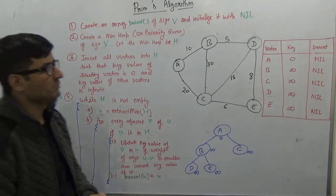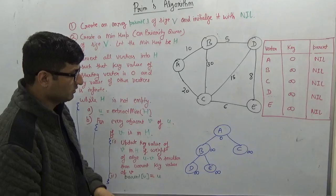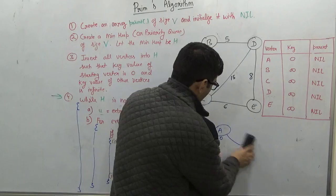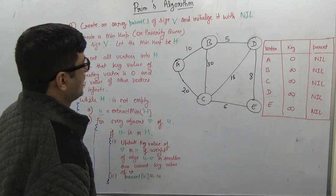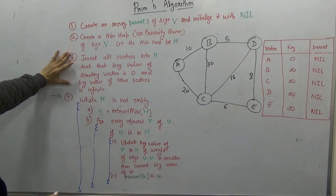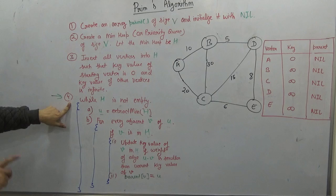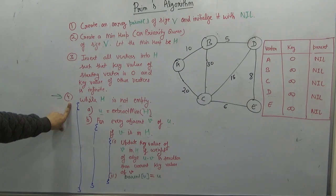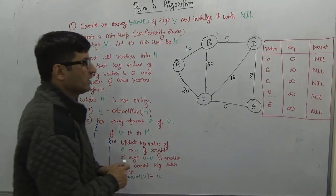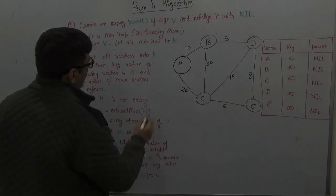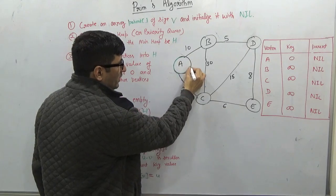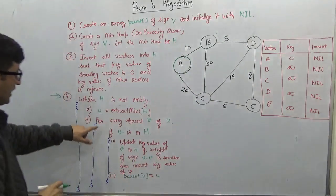We make the parent of every vertex null. For convenience, we draw this binary heap so we can demonstrate the algorithm easily. Once we have this binary heap with initial values, we run a loop that runs until the binary heap becomes empty. In each iteration, we extract the minimum. Here, the minimum key value is 0, so we always extract the starting vertex first — in this case, vertex A.